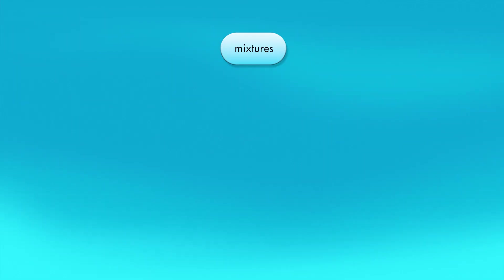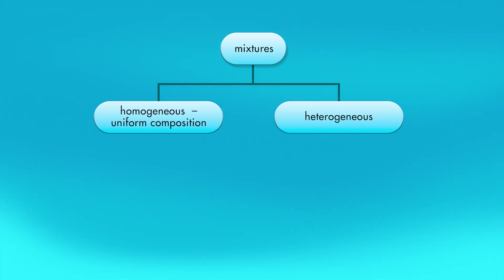Mixtures can be identified by their composition as either homogeneous or heterogeneous. A homogeneous mixture has a uniform composition throughout. The three types of homogeneous mixtures are alloys, gaseous mixtures, and solutions.